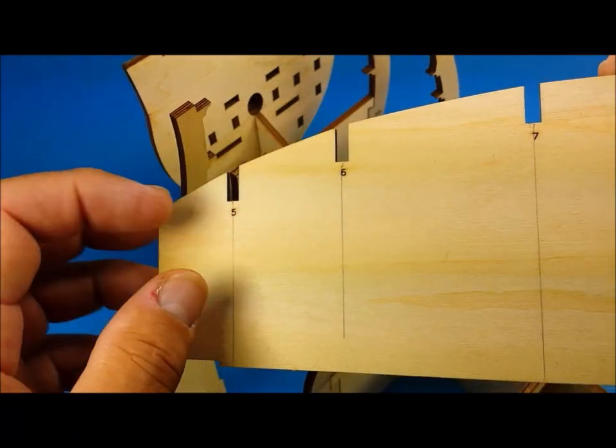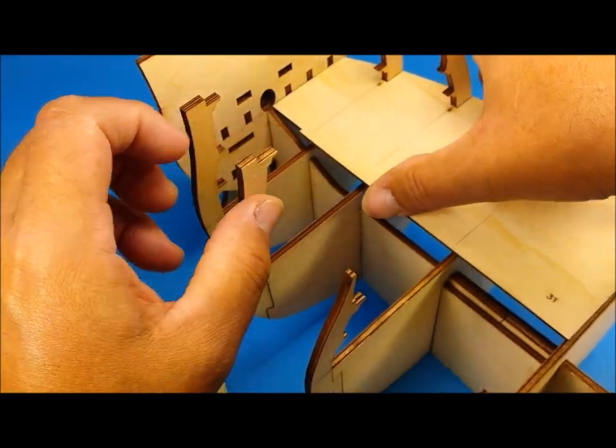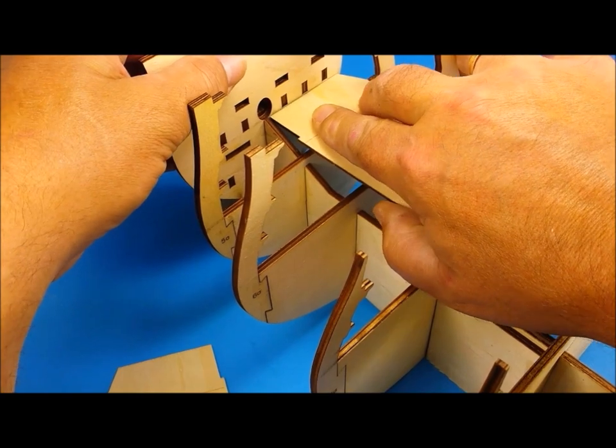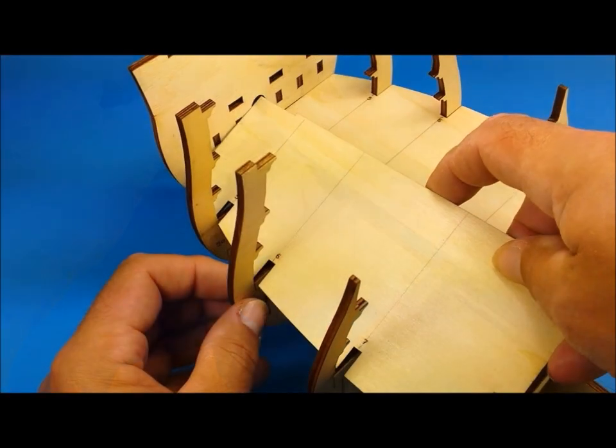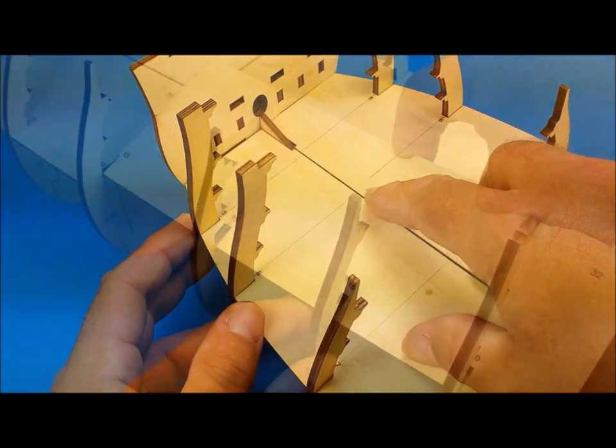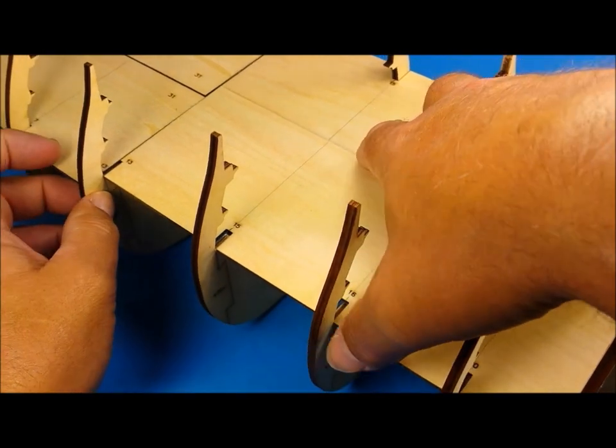Included in this first pack is the internal gun deck. These flat sections slide into position and will be fastened with nails and glue later on in the construction. This completes the assembly of pack one of Model Space's Sovereign of the Seas.